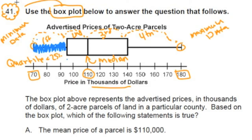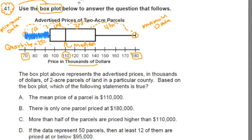Now that we got a little bit of the math, let's start by reading it over. It says use the box plot below to answer the question that follows. We're given a box plot involving advertised prices of two-acre parcels. This is the data we're going to be looking at here. This box plot organizes the information in thousands of dollars, so our minimum parcel of land sold for $70,000, our maximum parcel sold for $180,000, and our median or middle number sold for $110,000.